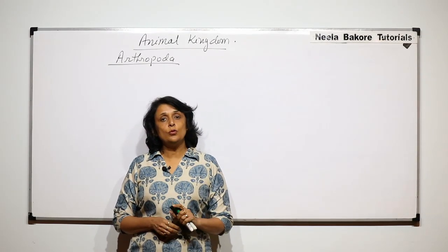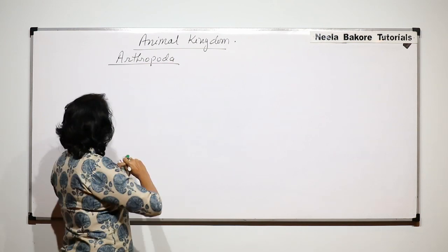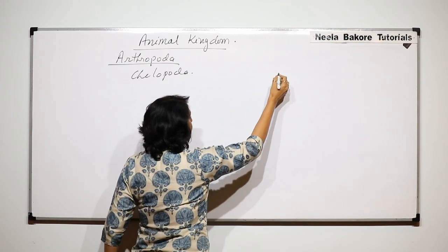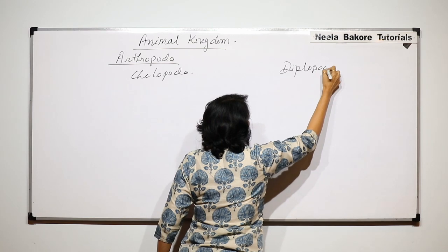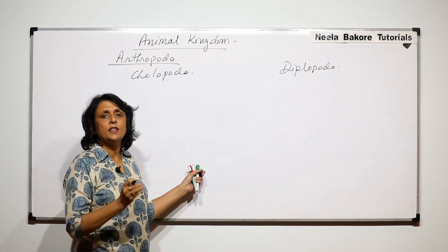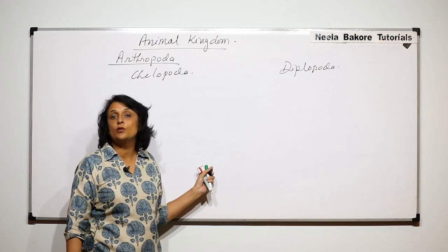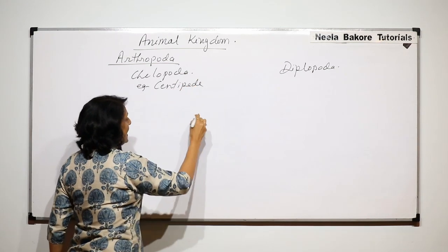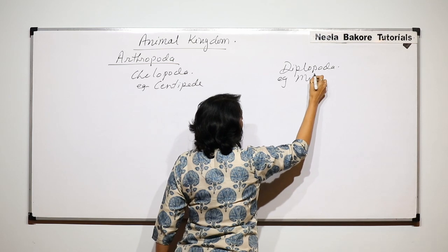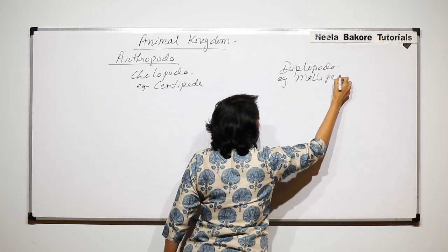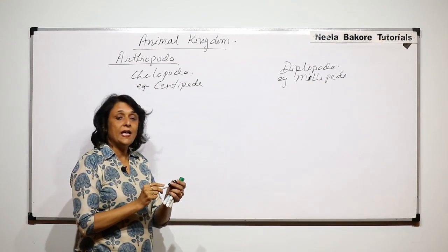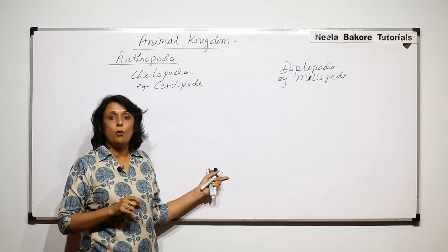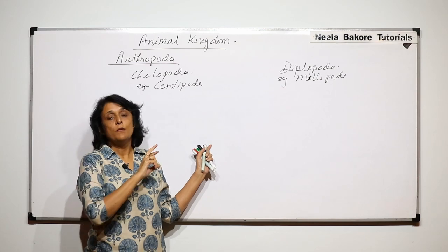In this part we'll talk about two classes of phylum Arthropoda. One class is Chilopoda and the second is Diplopoda. They are very much similar with some distinct differences, and that is why we are taking both of them together. In the case of Chilopoda the example is centipede, and in Diplopoda the example is millipede. Both are worm-like arthropods with segmented bodies, but there are distinct differences.